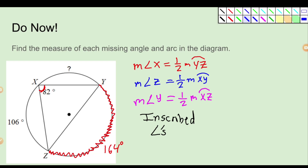Let's go with the blue arc. The measure of angle Z is equal to one half of the measure of arc XY. But I don't know either of those numbers, so I'm going to skip this and come back to it later. Let's try the next one. The measure of angle Y is equal to half of the measure of arc XZ. We do know this value, so angle Y is just half of 106, which is 53.